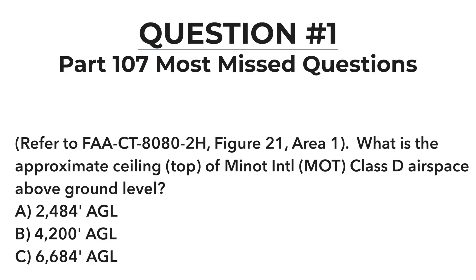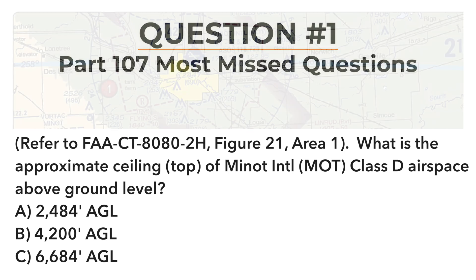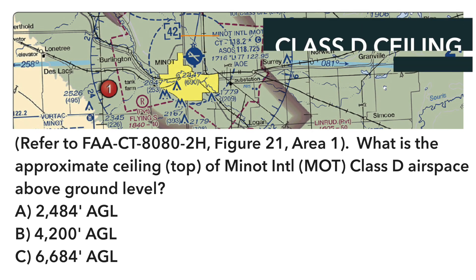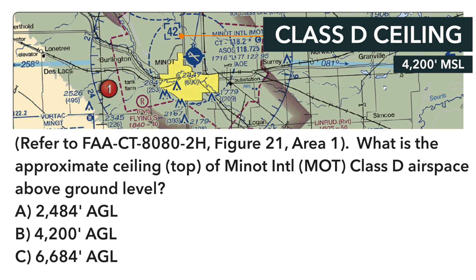Question one asks: refer to figure 21, area one — what is the approximate ceiling, or the top, of Minot International Class D airspace above ground level? If we go to area one on this chart, we see the Minot Class D airspace — the dashed blue line — and we see the number in brackets: 42. That means the ceiling of that Class D airspace is 4,200 feet MSL.